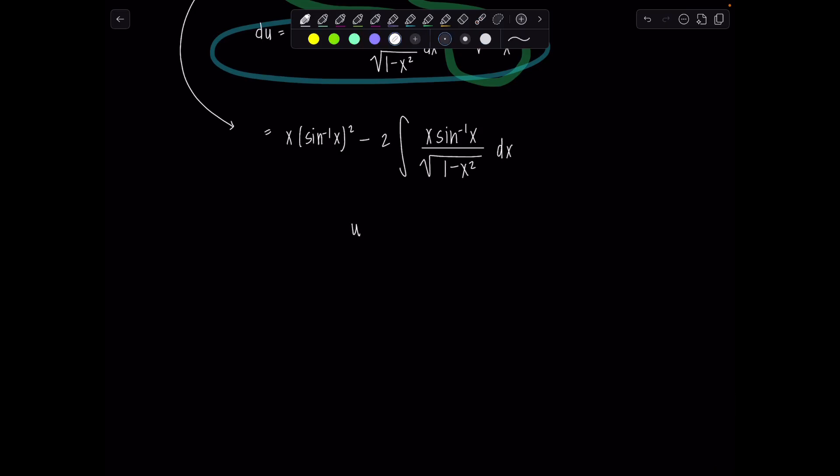I have to call my variable something a wee bit different though so I'll say u bar this time is let it just be the inverse trig part sine inverse of x and then dv bar can be the rest. So what's the rest? I've got an x, I've got a dx and I've got a rad one minus x squared in the bottom. So all of that is dv bar. x over rad one minus x squared dx.